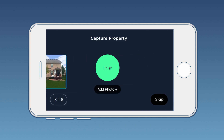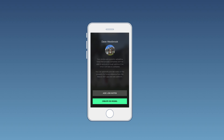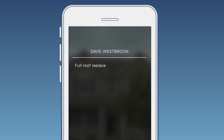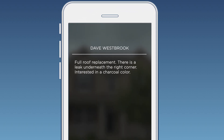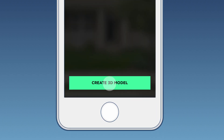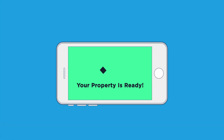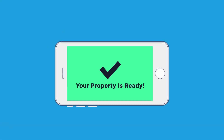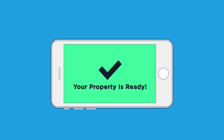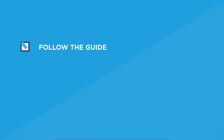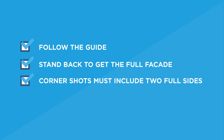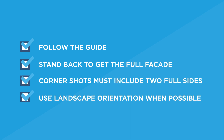Once you've captured the entire property, tap finish. You can add job notes that you and your team can reference later. When you're done adding notes, tap submit photos or create 3D model and your work is done. You'll receive a mobile notification and email when your 3D model and measurements are ready. Keep in mind that the better your photos are following all of the tips we mentioned, the faster the turnaround time will be.